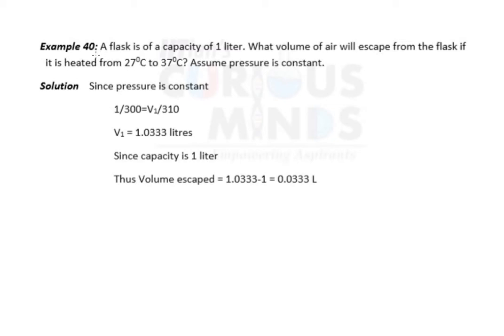Hi friends, let us solve this problem. A flask is of a capacity of 1 liter. What volume of air will escape from the flask if it is heated from 27 degrees Celsius to 37 degrees Celsius? Assume pressure is constant.